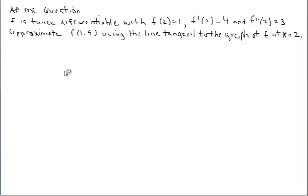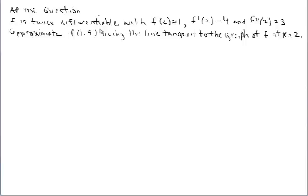We're going to continue our look at linearization through this past AP multiple choice question. We were told that f is twice differentiable, and all that means is that we can find its first and second derivative, and that both of those derivatives are themselves differentiable.